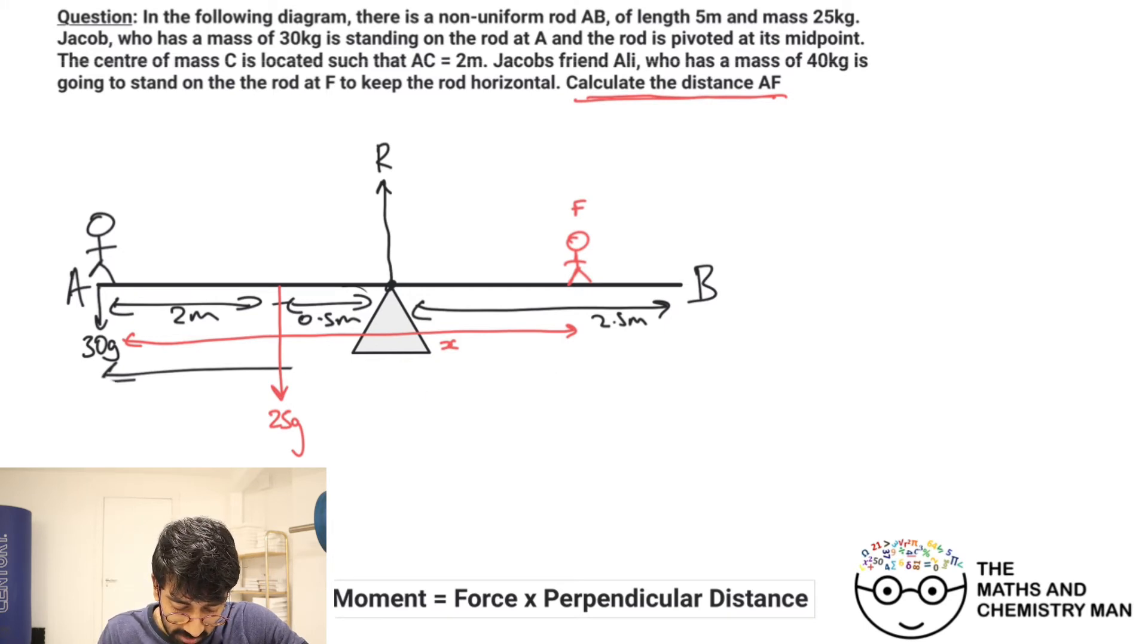We've got a great diagram. What we can do just to make it a bit easier to look at is just get rid of this distance, the five meters that we had there. Once we've done that, I think we're ready to go. Now, we're going to look up and down, so upwards forces equals downwards forces.